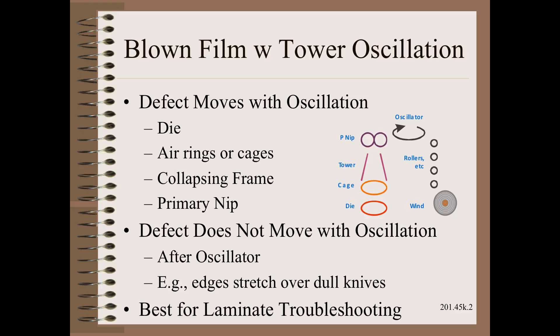If we look at the general case of defects, we will note that the oscillator separates the world into two parts. Defects made upstream of the oscillator will sweep sideways across the finished rolls at the same rate as the oscillation speed. The very few defects made downstream of the oscillator will remain relatively stationary with respect to CD position.